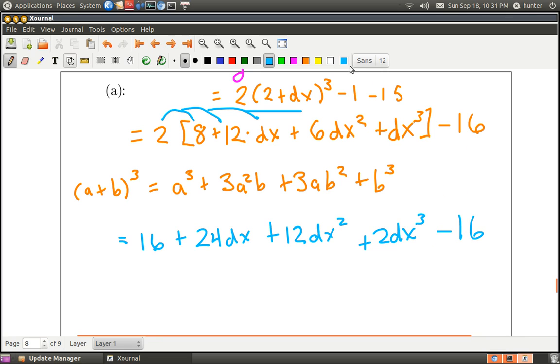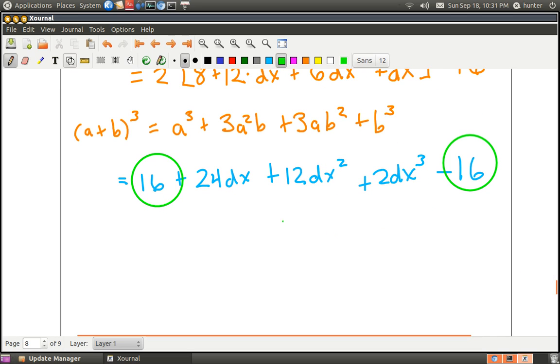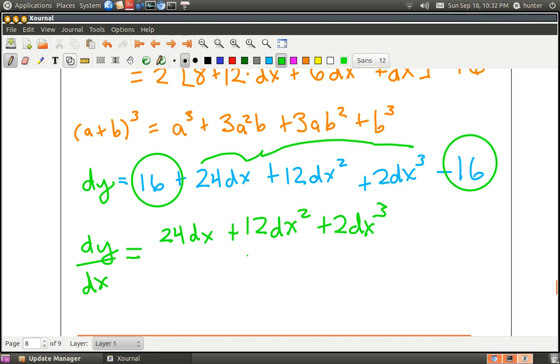And now the cancellation miracle has finally occurred, so here's the 16 that has no dx, magically cancels with a 16 on the end. And so remember that what all this stuff amounts to is dy, so what I have here now is dy over dx is equal to, I could just take all this good stuff here in the middle, so it is 24 dx plus 12 dx squared plus 2 dx cubed all over dx.